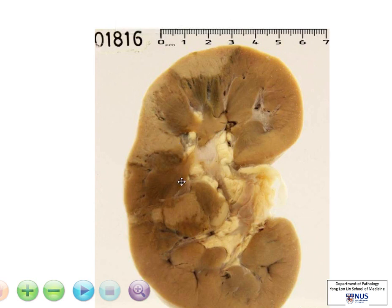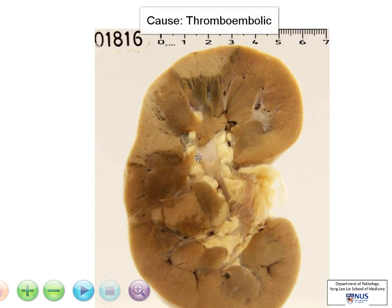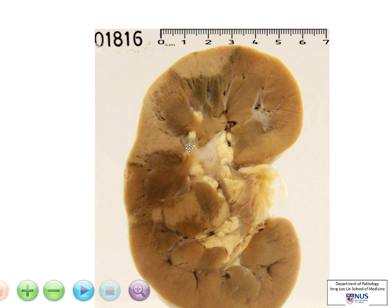The commonest cause in this instance is usually thromboembolic phenomena going into the branches of the renal arteries, therefore causing occlusion, and causing this wedge-shaped area of coagulative necrosis.